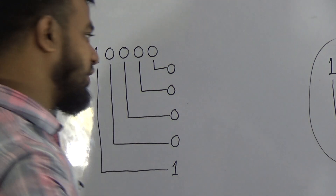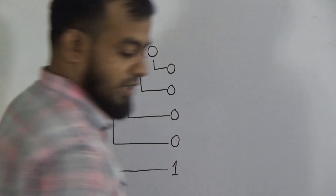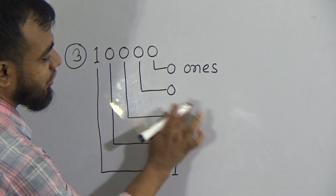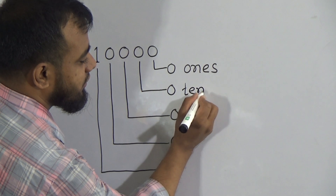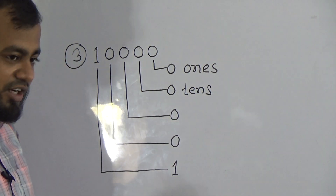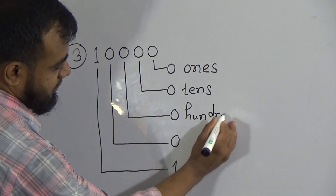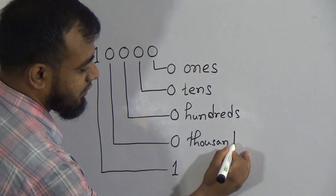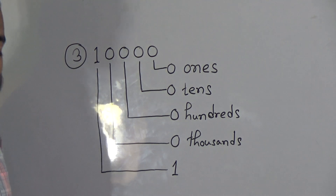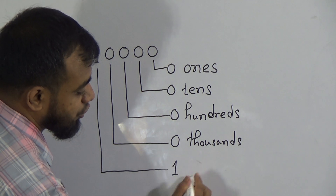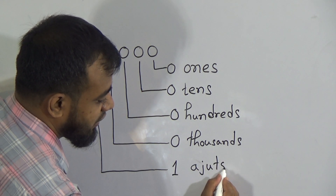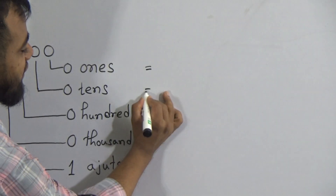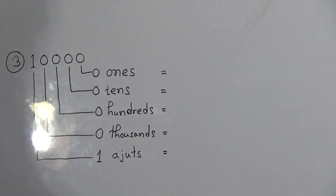Write the place value names: ones (O-N-E-S), tens, hundreds, thousands, and ojuts (A-J-U-T-S) for the digit 1. Draw the lines, write the digits in their correct positions, write all the place names, then give equal signs on each line.